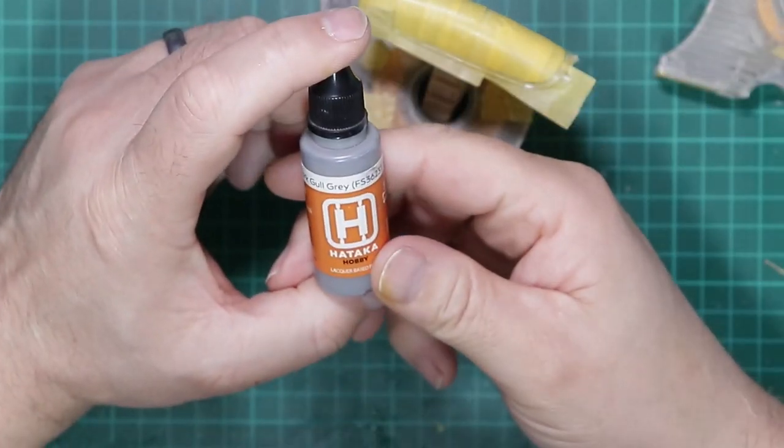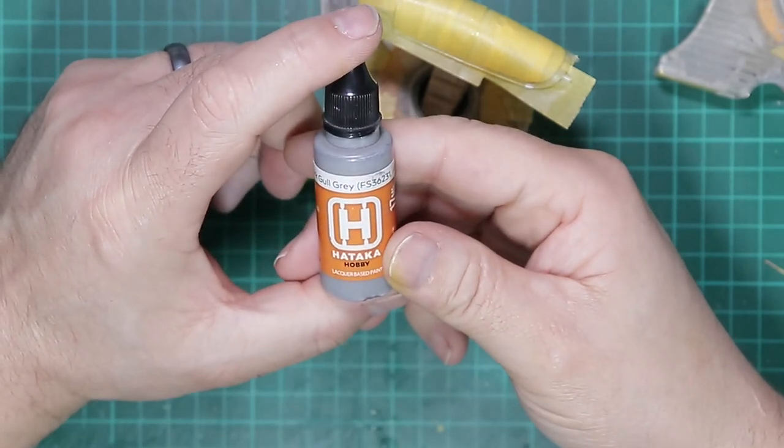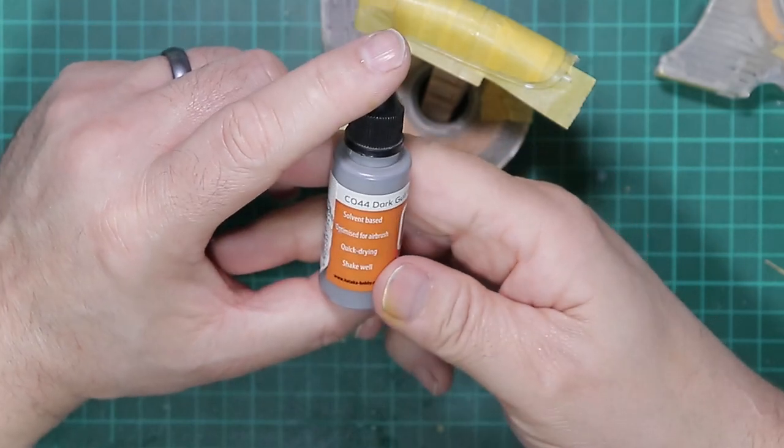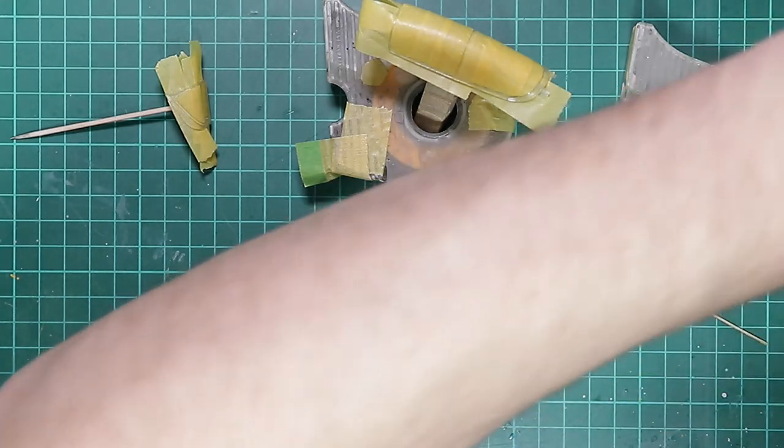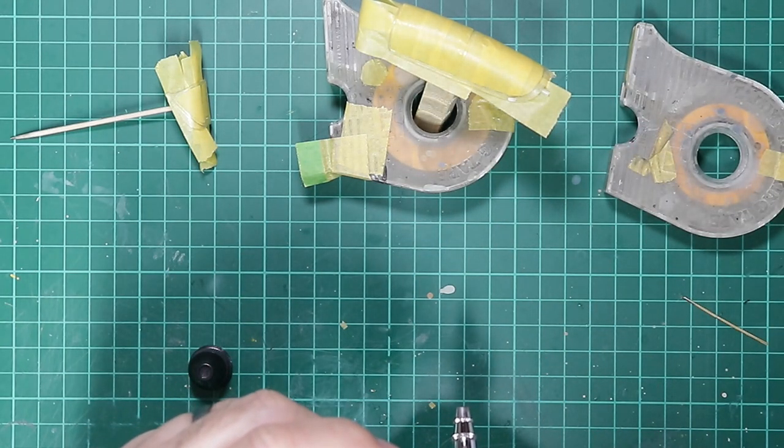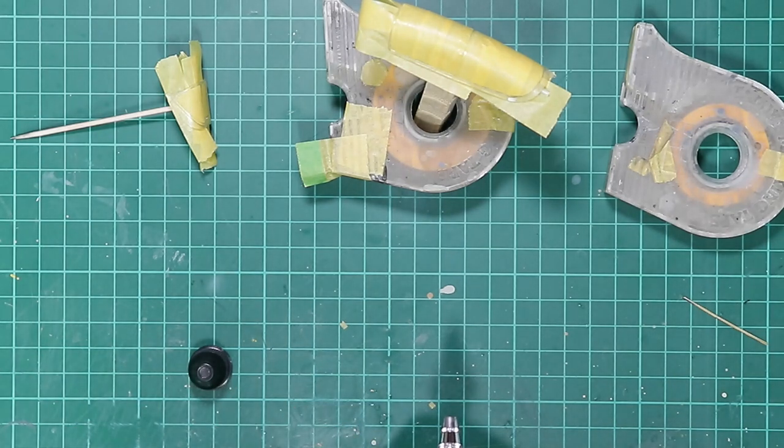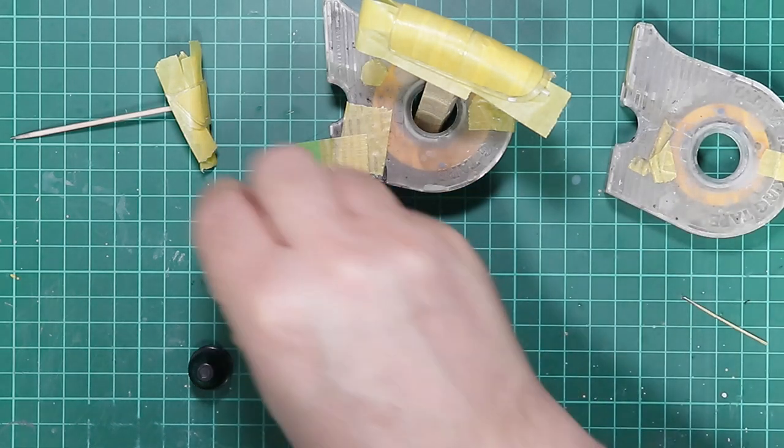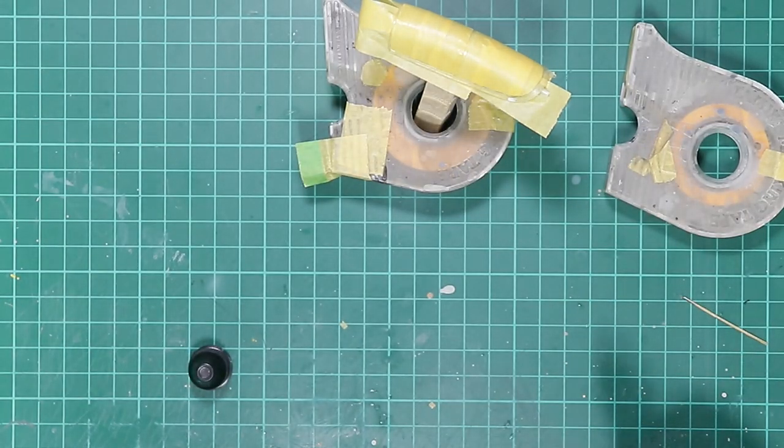So we're going back to what we used for the cockpit in the very first video, which is TAKA CO44 dark gold grey. I'm just going to add some to the airbrush color cup. TAKA is quite thick.